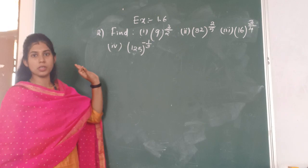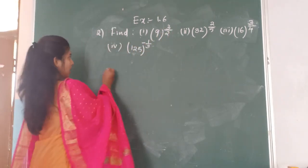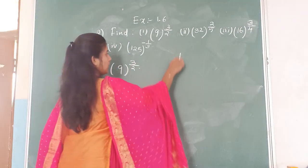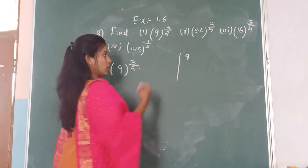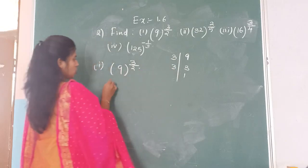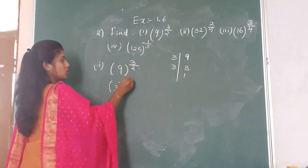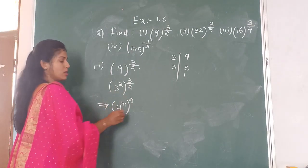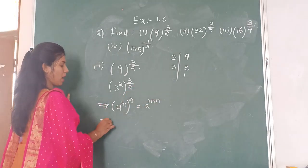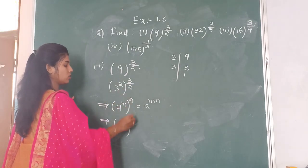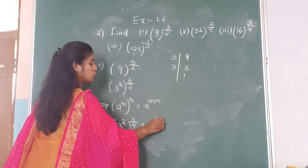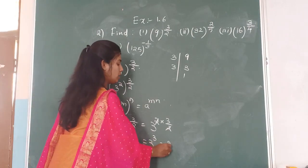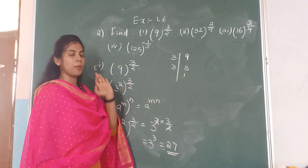The second question: find the exponents of the given number. First one is 9 to the power of 3 by 2. Using prime factorization: 9 = 3 × 3 = 3 squared. So we have 3 squared, whole to the power of 3 by 2. Applying the law, multiply powers: 2 into 3 by 2 — the 2s cancel — leaving 3 cubed. What is 3 cubed? 3 × 3 is 9, 9 × 3 is 27. The answer is 27.